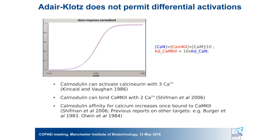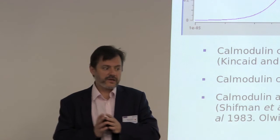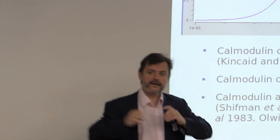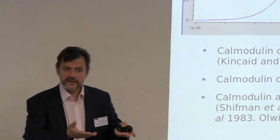We knew that wasn't right because experimentally calmodulin can activate calcineurin with less than four calcium ions bound, and it can also bind CaMKinase 2 with only two calcium ions. Crucially, calmodulin's affinity for calcium increases when it is bound to CaMKinase 2. These are hallmarks of allosteric behavior. If you have an induced-fit model where you bind a ligand and then activate things, you will never change the affinity based on the target.